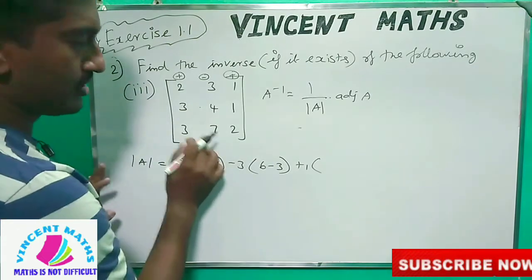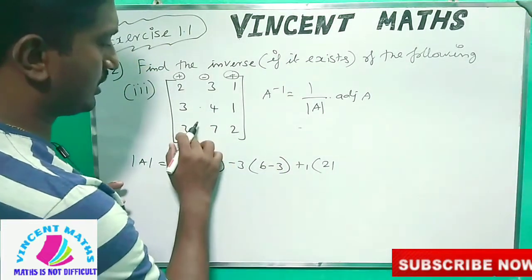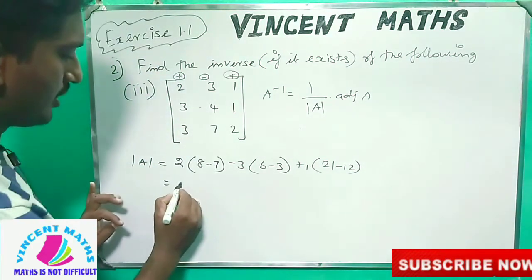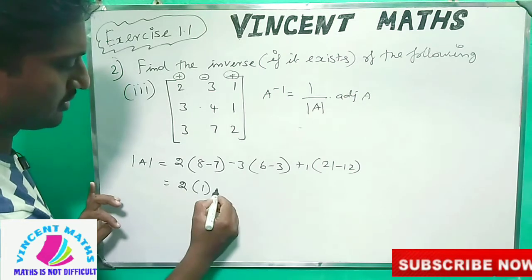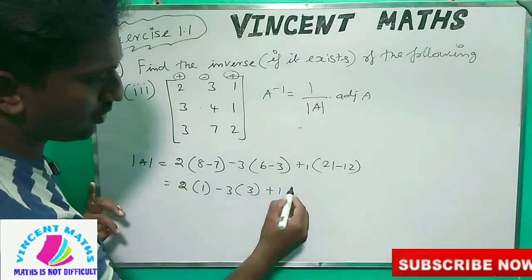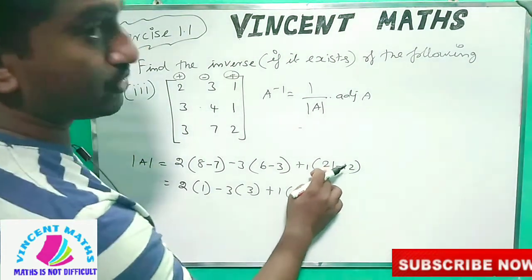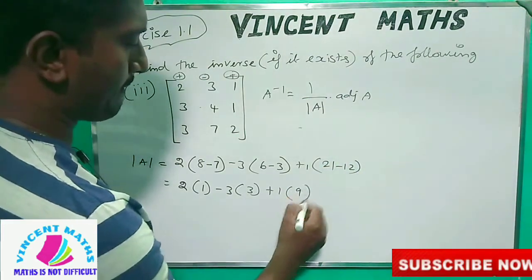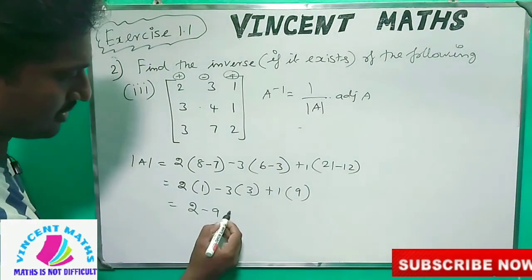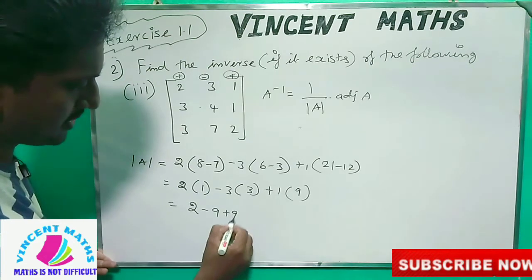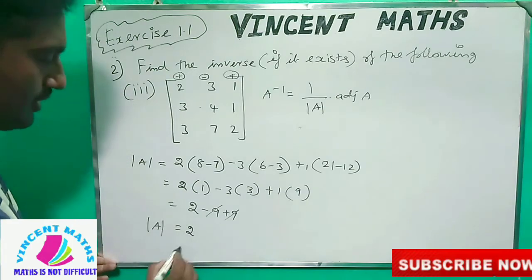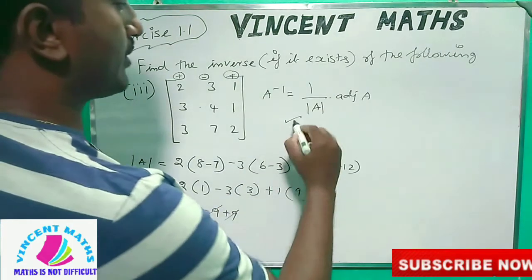Continuing the expansion: plus 1, 3, 7 gives 21. Then 3, 4 gives 12, minus 12. So: 2 into 1 minus 3 into 3, plus 1 into 21, and 12 then 9. So 2 minus 9 is plus 9. If we want to answer this way, it will be 2. The determinant of A value is 2, so we can find A inverse.